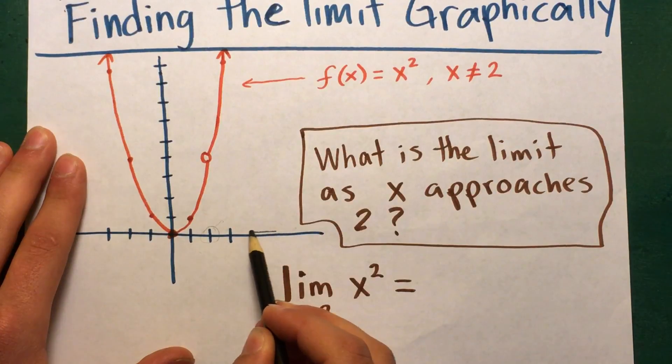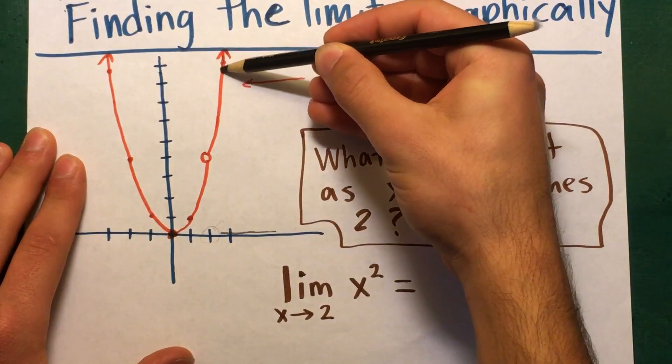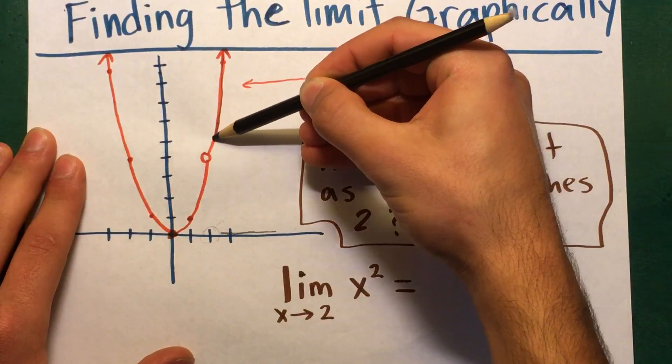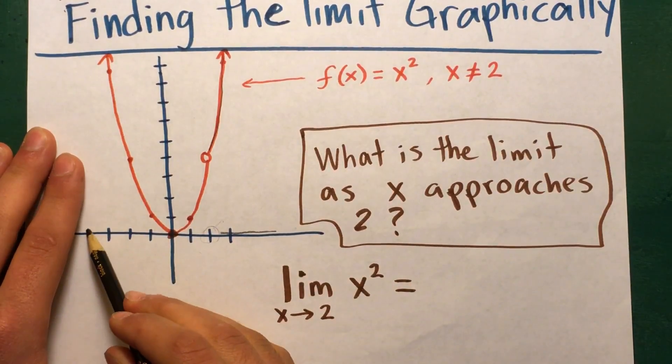Coming from the left to the right as x approaches 2, see the function is going like that and it's approaching the hole.